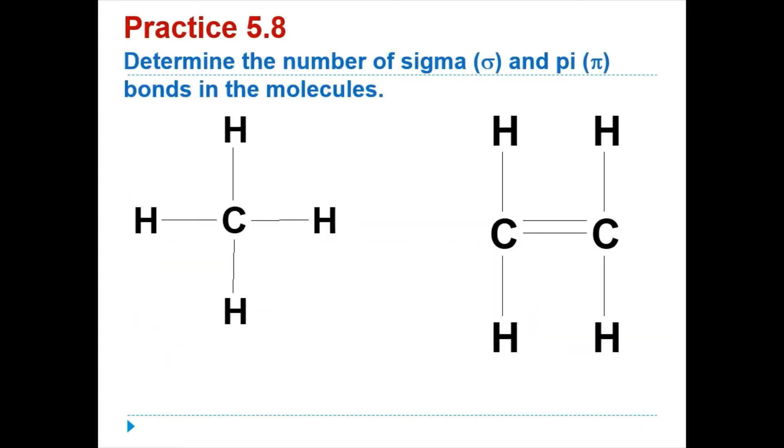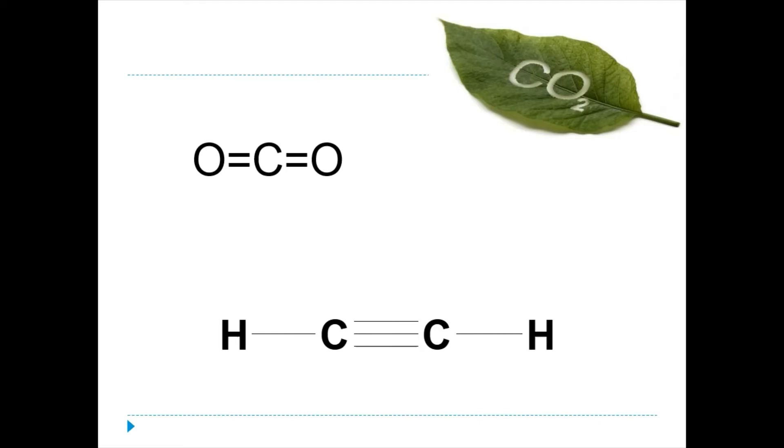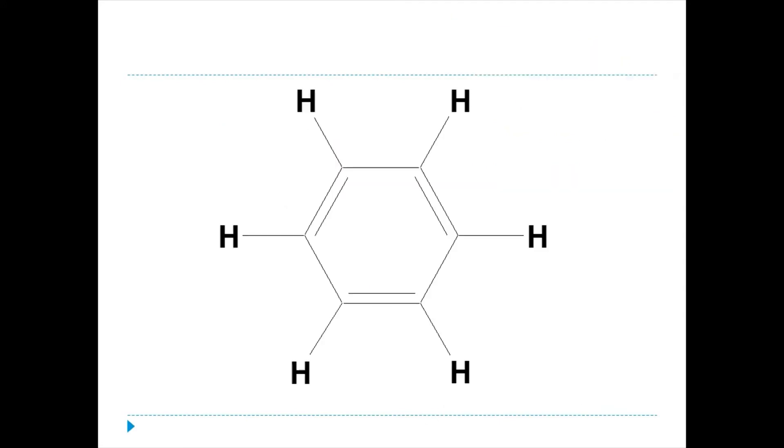Let's do practice 5.8 together. Determine the number of sigma and pi bonds in the molecules. For CH4, we have four sigma bonds because they have four single bonds. For C2H4, we have one, two, three, four, five sigma bonds and we have one pi bond. For carbon dioxide, we have one and two sigma bonds and another one and two pi bonds. For ethyne, we have one, two, three sigma bonds and another two pi bonds.